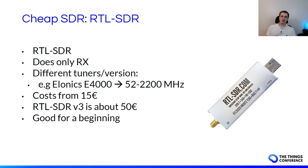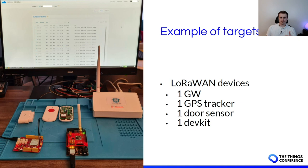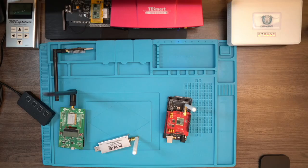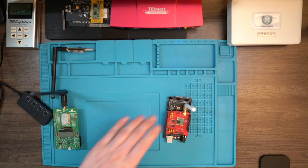Here are examples of targets we focused on during our research: some LoRa devices including a gateway, a GPS tracker, a dew sensor, and a dev kit. Today we'll mostly look at one dev kit, one end node, and a gateway, since we don't have a lot of time.